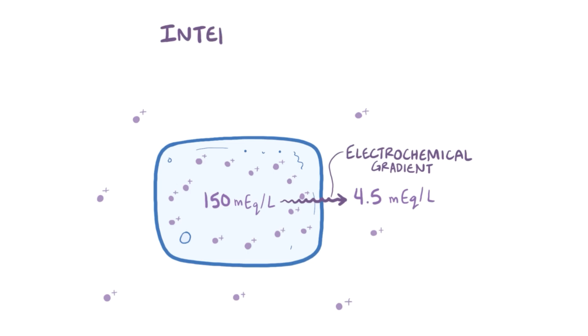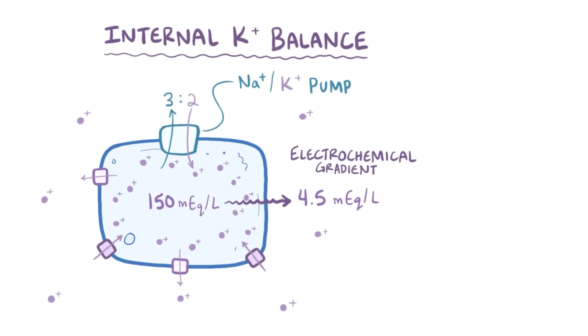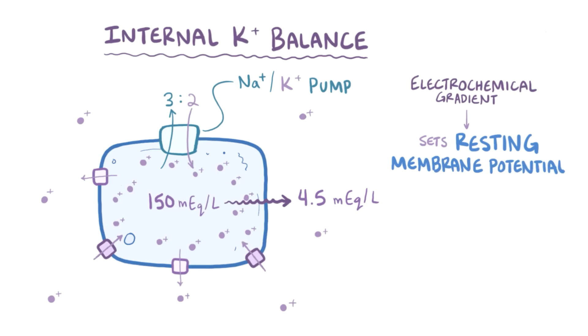And this is called the internal potassium balance. This balance is maintained by the sodium-potassium pump, which pumps two potassium ions in for every three sodium ions out, as well as potassium leak channels and inward rectifier channels that are scattered throughout the membrane. This concentration gradient is extremely important for setting the resting membrane potential of excitable cell membranes, which is needed for normal contraction of smooth, cardiac, and skeletal muscles.